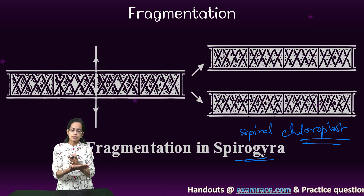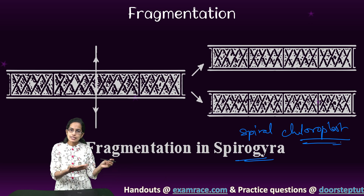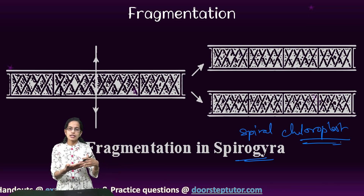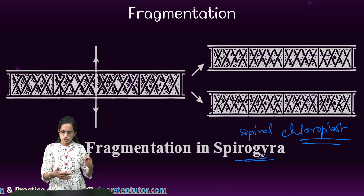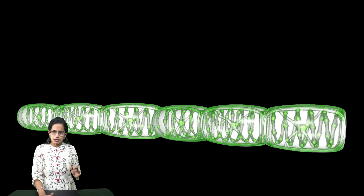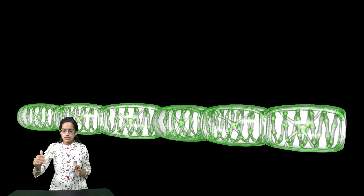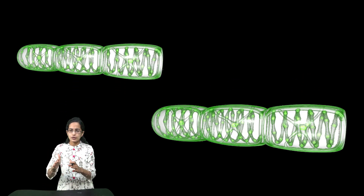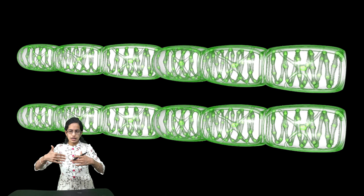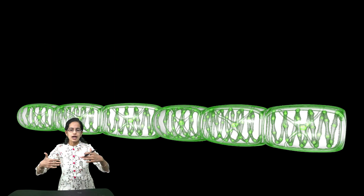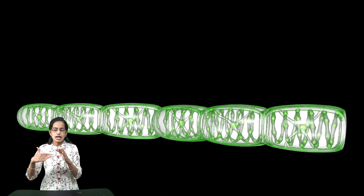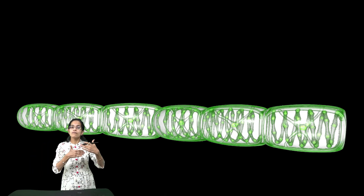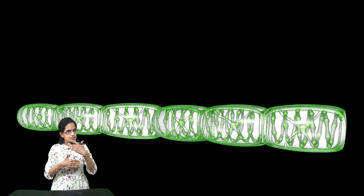In the case of asexual reproduction, akinetes or aplanospores are formed in Spirogyra. For sexual reproduction, there is a process of conjugation, which we will cover in a separate lecture. In fragmentation, the Spirogyra separates out into two filaments and each develops into a new filament.